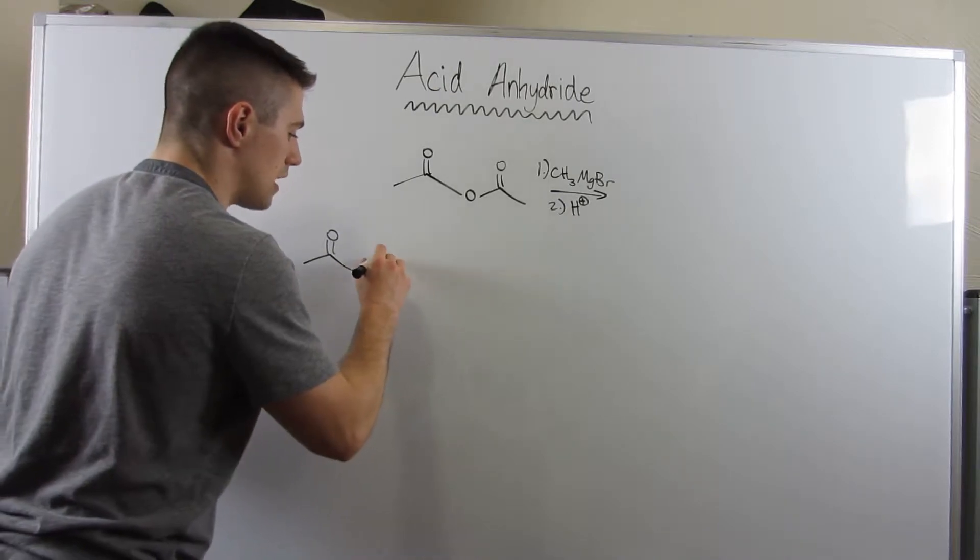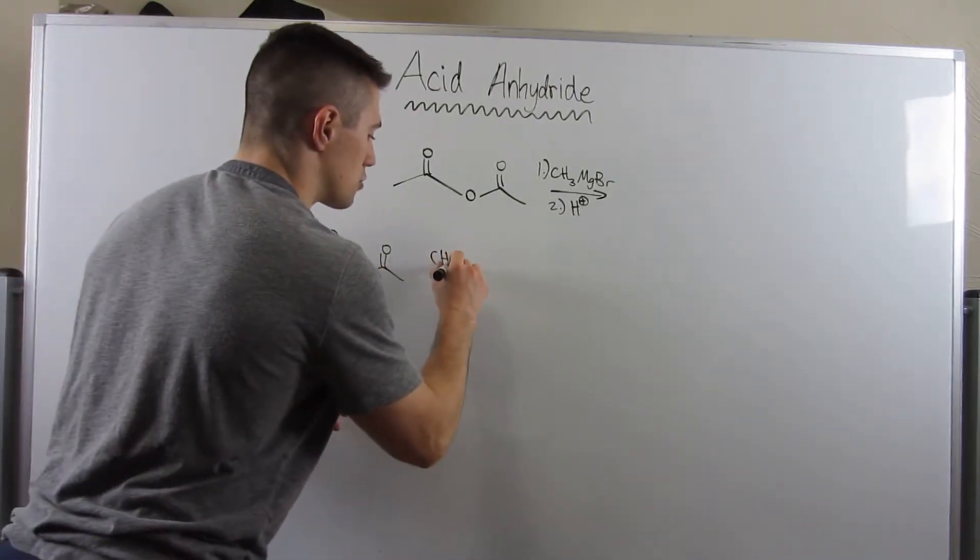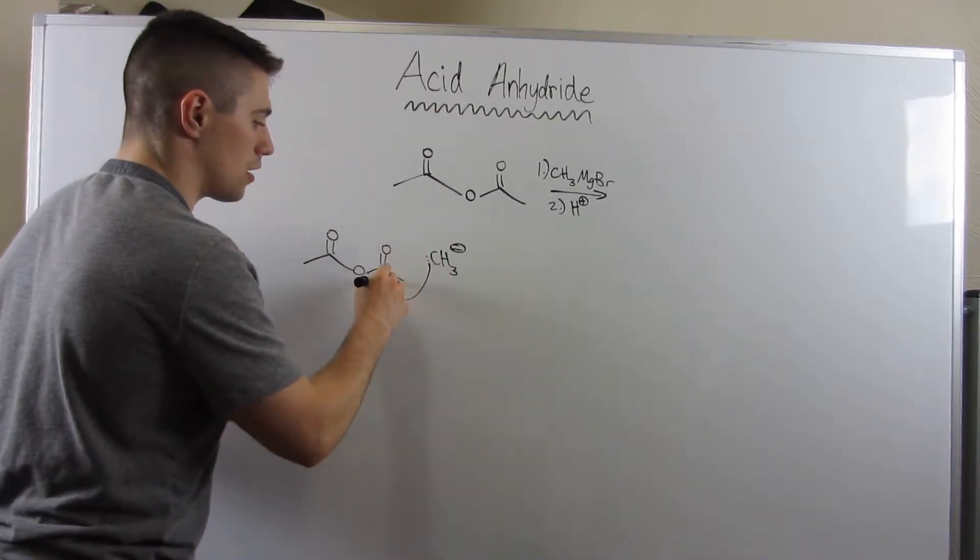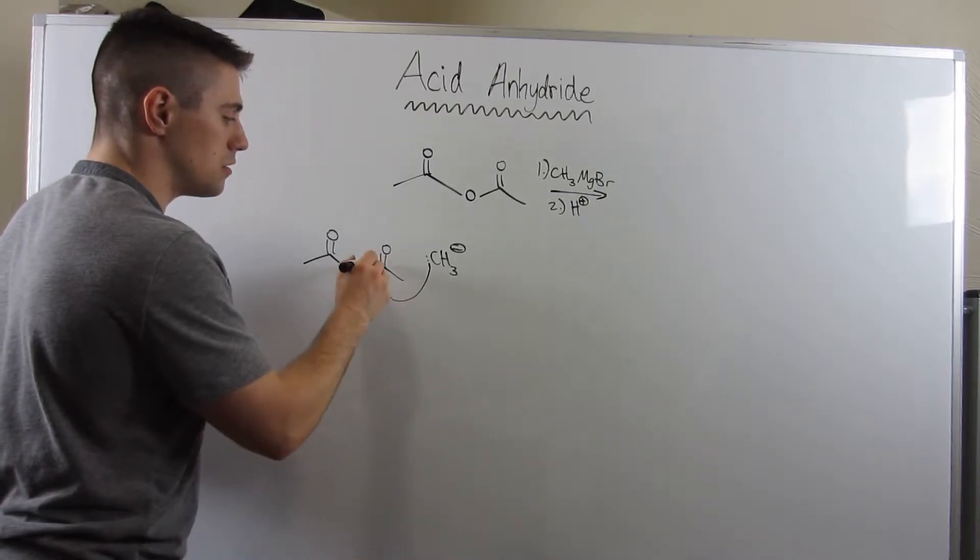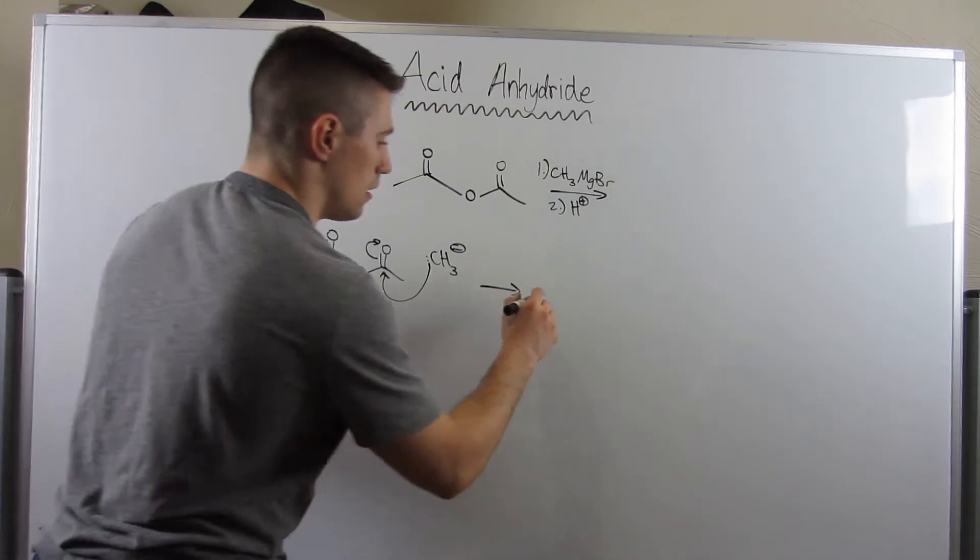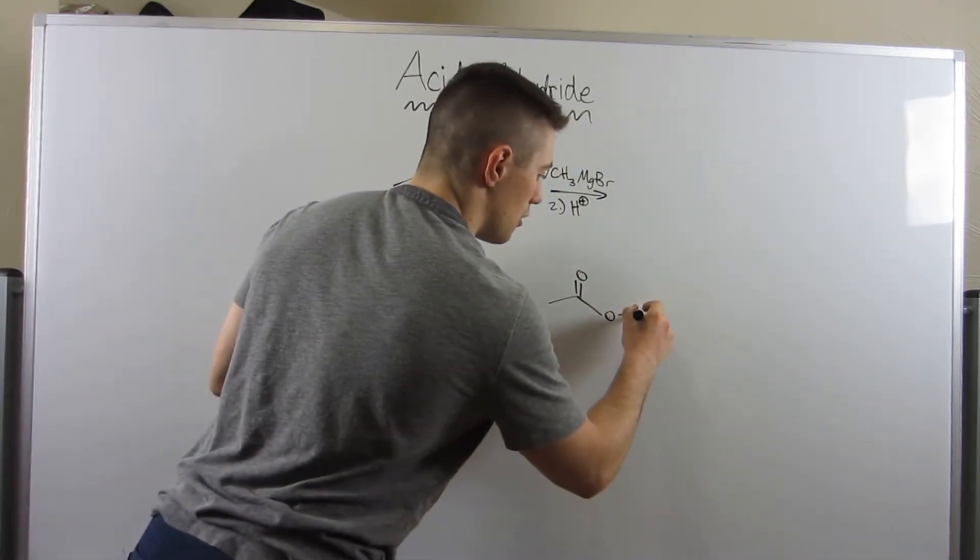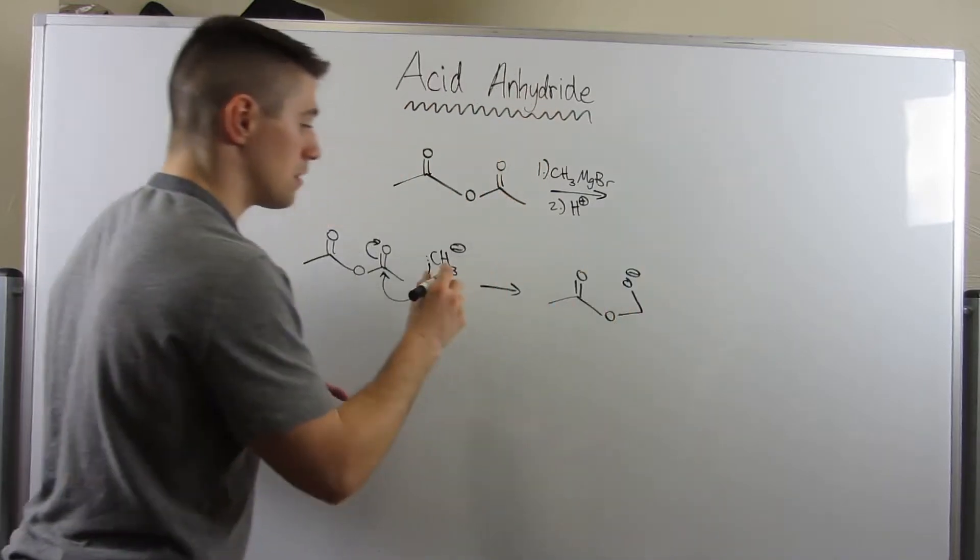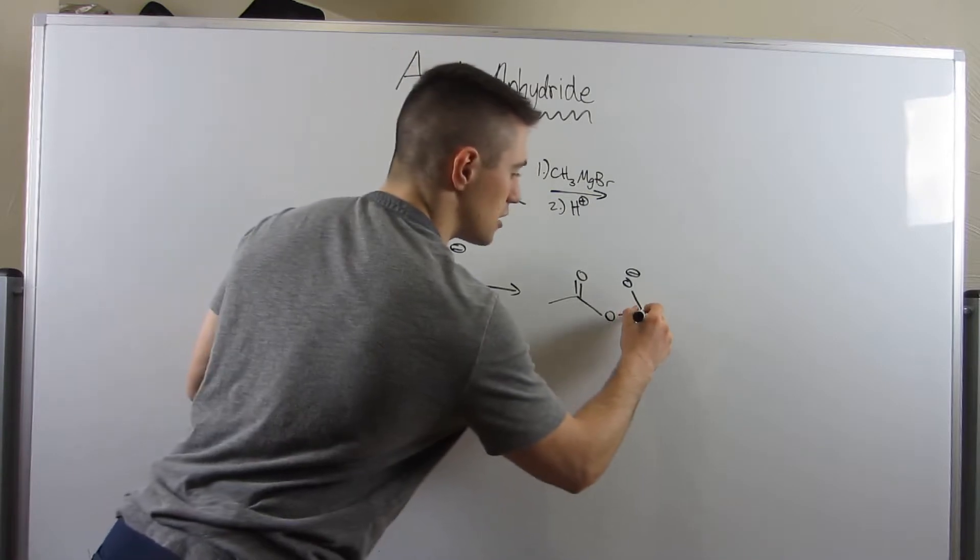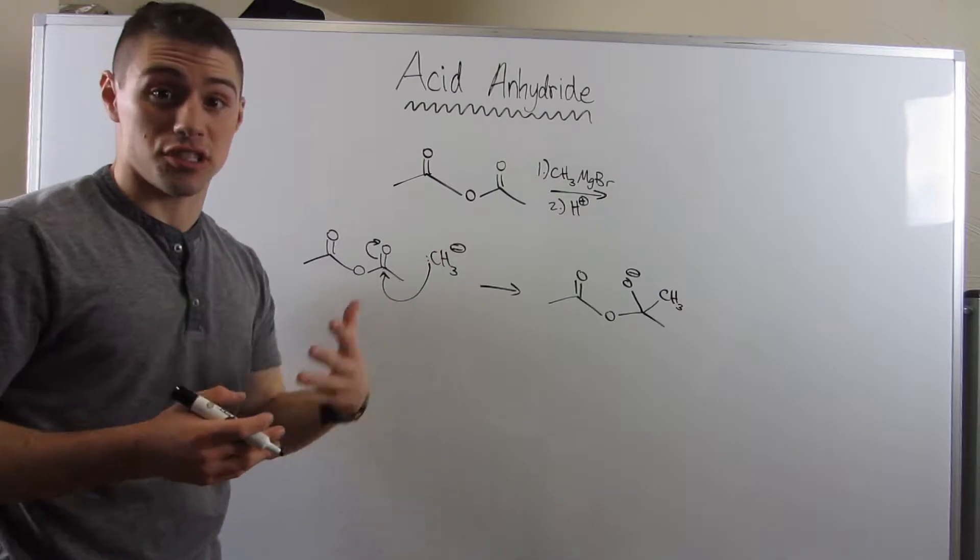It does not matter which carbonyl I attack, right, because it's symmetrical. So if I have my CH3-, I'm going to pick this one to attack. So I'll come swing down, attack my carbonyl, electrons go up. I have my piece to the left, I have an O- up top, I have my methyl group down here and my CH3 up here. I have my tetrahedral intermediate, right? This is the addition step.